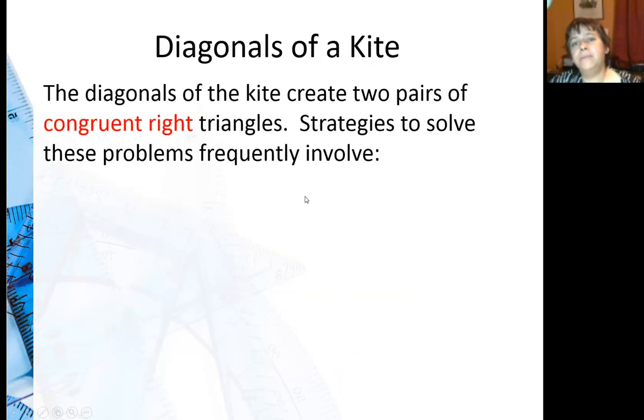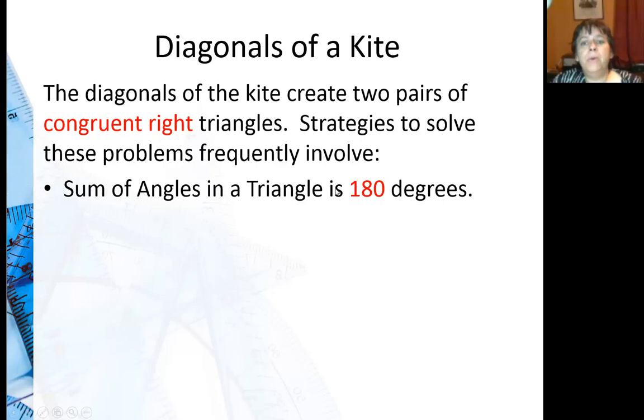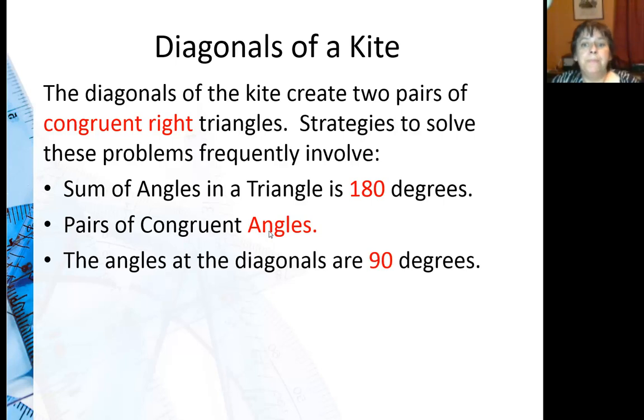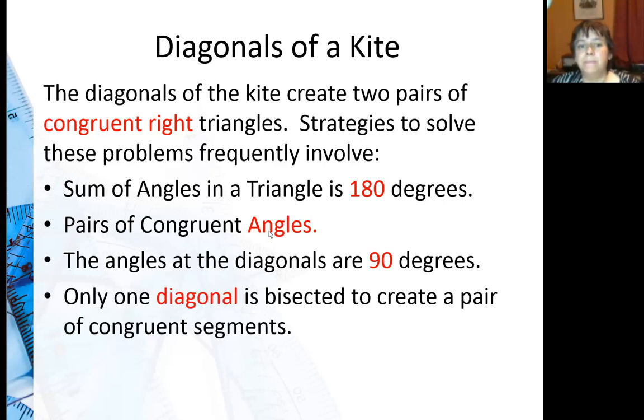So working with diagonals of a kite, basically it's important to know that they create two pairs of congruent right triangles. So if you position your kite so that the two congruent angles are across from each other horizontally, you're going to have a set of congruent right triangles on top here and on bottom. Some strategies that you can use to solve these, one is that the angles add up to 180. Also they create pairs of congruent angles. Remember that it's going to bisect some angles, so that might be helpful. And the angles of diagonals are 90 degrees. You might end up using Pythagorean theorem quite a few times on these. And only one diagonal is bisected to create a pair of congruent segments. Not both, just the one. And it should be the one that makes sense. We usually think of it as a short one, but it's not always a short one.